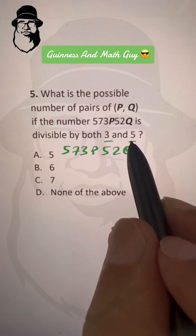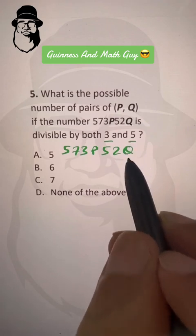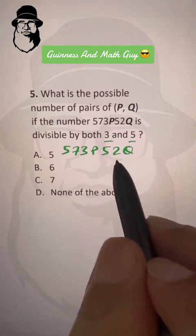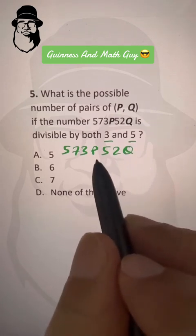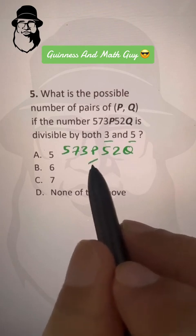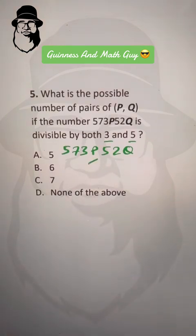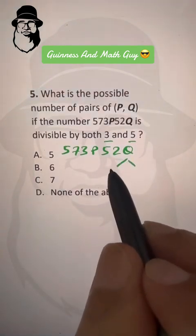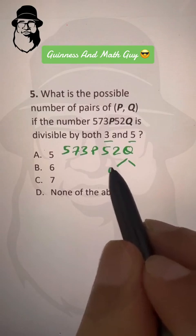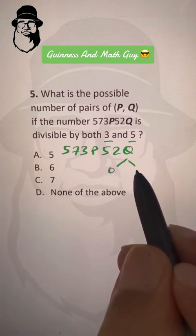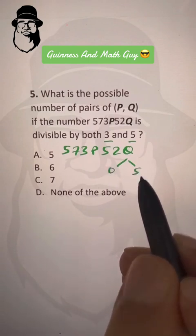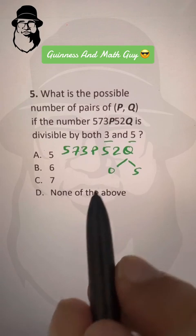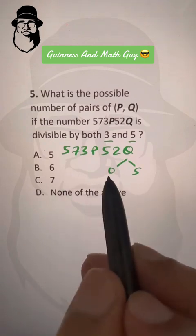For divisibility by 5, q must be 0 or 5, so there are two cases: q being 0 or q being 5. Now for the divisibility by 3, we add the digits and check if the sum is divisible by 3.